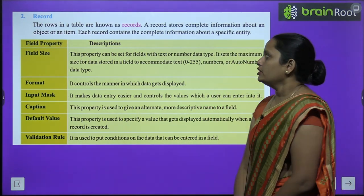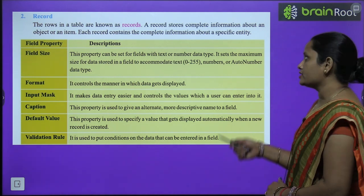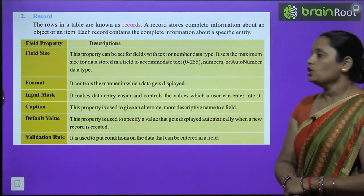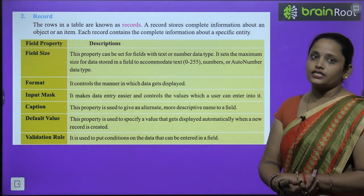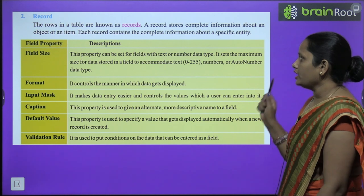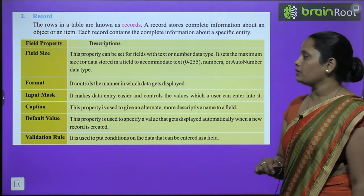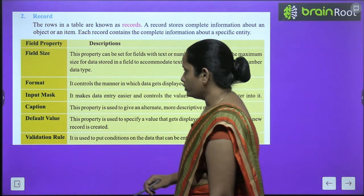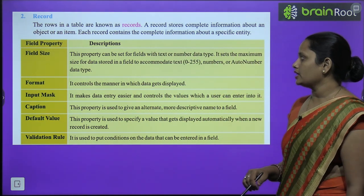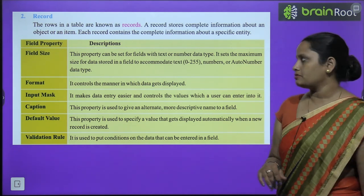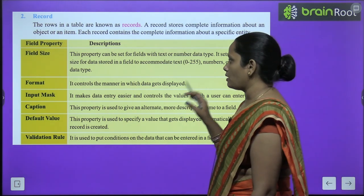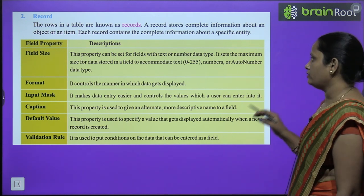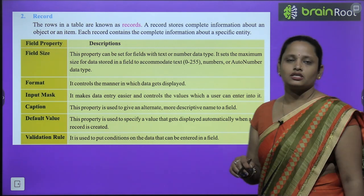Now let's learn about Record. The rows in the table are known as records. A record stores complete information about an object or item. Each record contains the complete information about a specific entity. Field Size property sets the maximum size for data stored in a field — for text it accommodates 0 to 255 characters, and can also hold numbers and auto numbers.